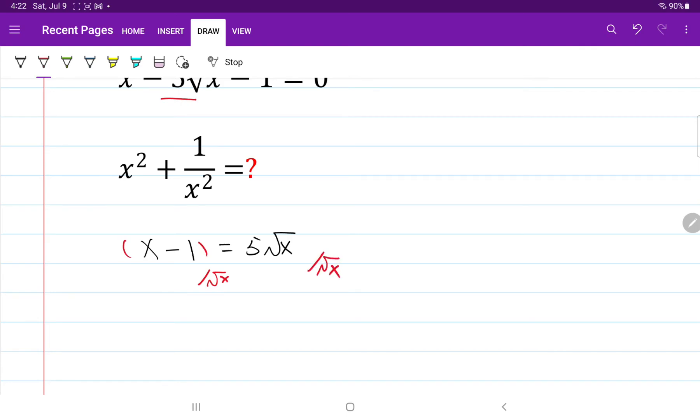So now we have square root of x minus 1 over square root of x on the left-hand side is equal to 5.